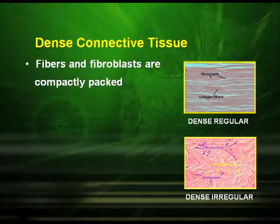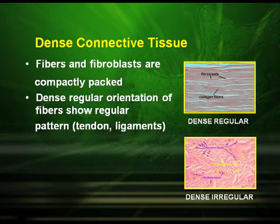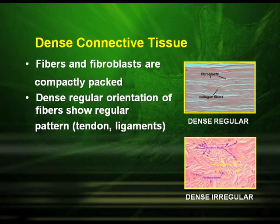In dense connective tissue, the fibers and fibroblasts are compactly packed. Dense regular orientation of fibers shows a regular pattern, seen in tendons and ligaments. Dense irregular orientation of fibers shows an irregular pattern, found in fibroblasts and fibers.